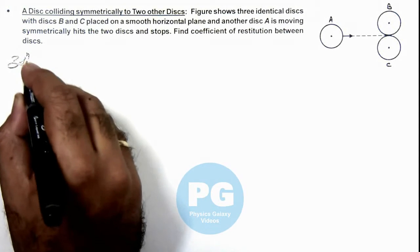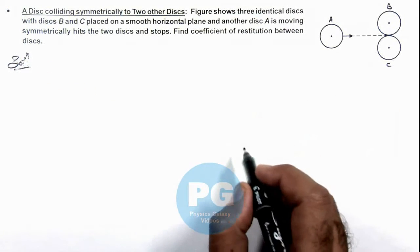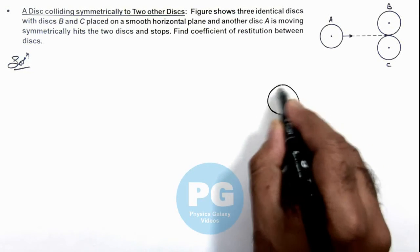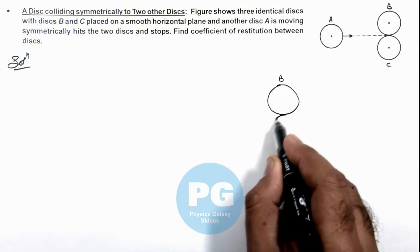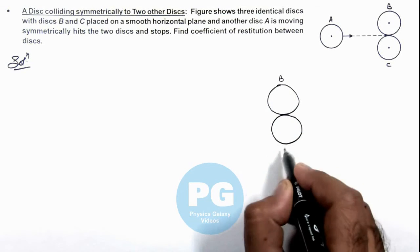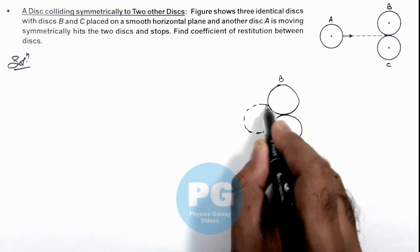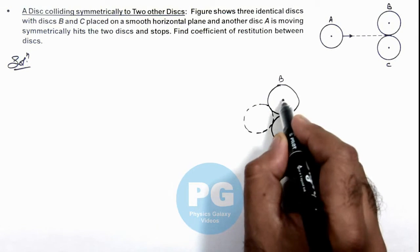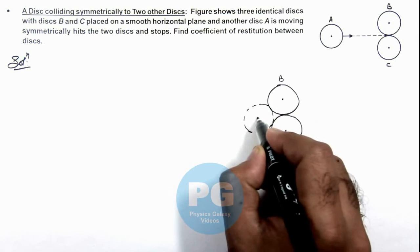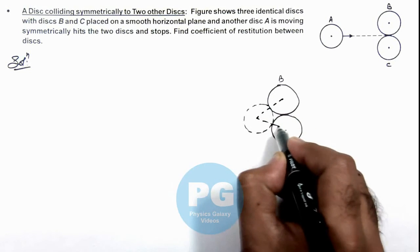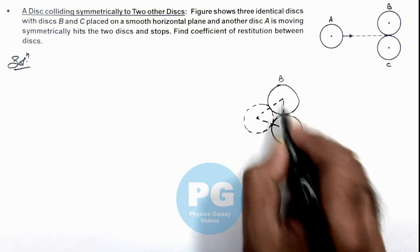If we draw the situation at the time of collision, here you can see if these are the two discs B and C placed in contact, and another ball A comes and strikes symmetrically. Then we can see their centers will form an equilateral triangle, as all sides of this triangle are equal.